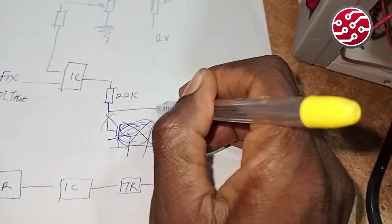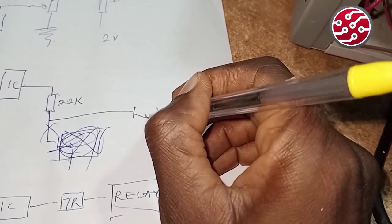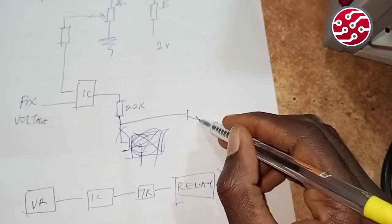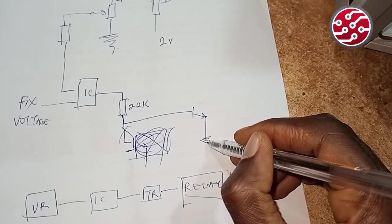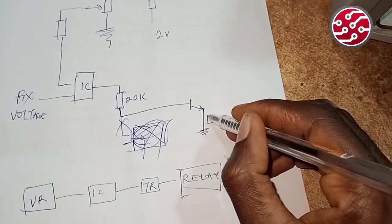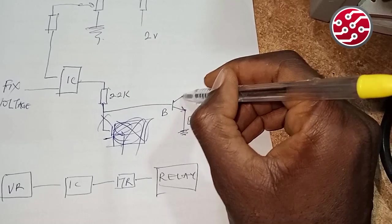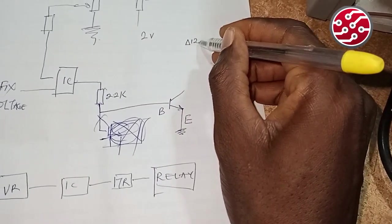Let me sketch it again. Now this is the transistor. Sorry, my hand is a little bit shaky. This place leads to ground, which is the emitter. This place is the base.